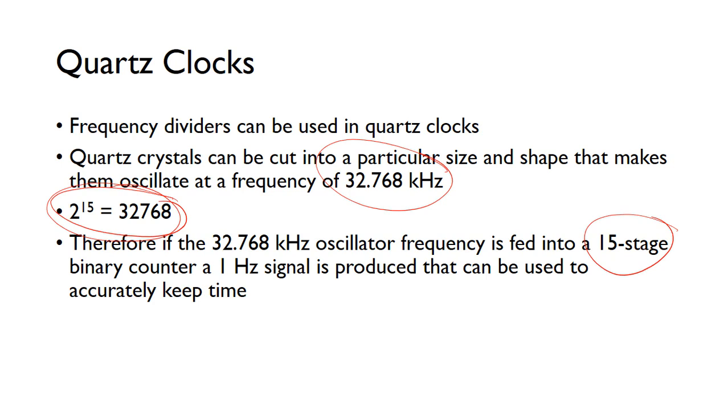The 32.768 kilohertz will get divided down to a 1 Hz signal, and this 1 Hz signal can be used to keep track of the seconds that pass and help us keep track of time.